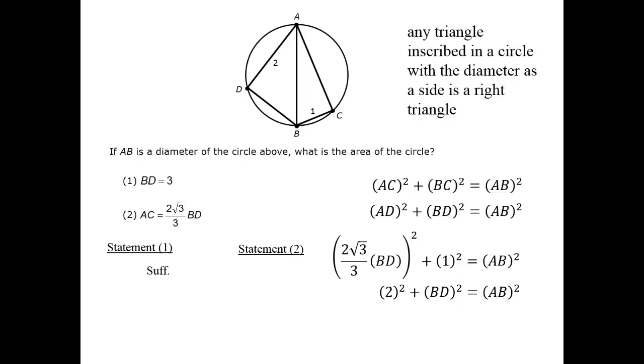It turns out that we have two distinct equations and only two variables. We can substitute BD squared and thus solve for AB squared, and we will be able to obtain the area. Statement 2, therefore, is sufficient. The correct answer is D.